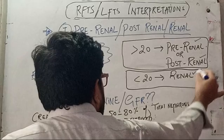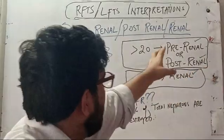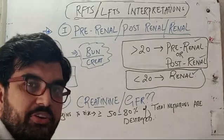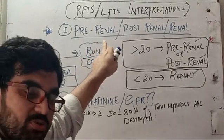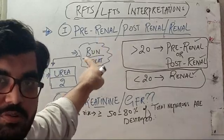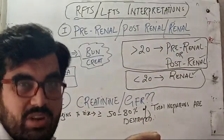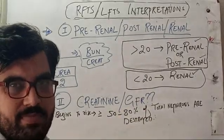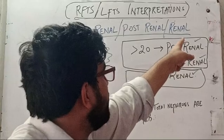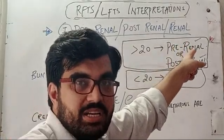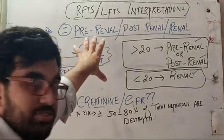First identify whether the problem is pre-renal, post-renal, or renal. If post-renal, the most common cause is obstruction — relieve the obstruction and the problem is solved. If pre-renal, the most common cause is decreased perfusion — find and correct the cause. If renal, find the cause; the most common causes of acute or chronic renal failure are hypertension and diabetes. Manage these conditions; you cannot reverse advanced kidney disease, but you can control progression at earlier stages.